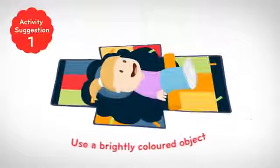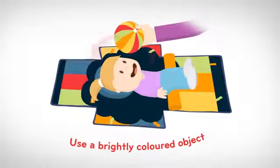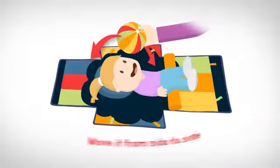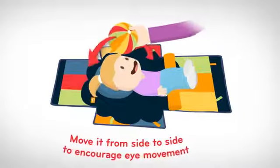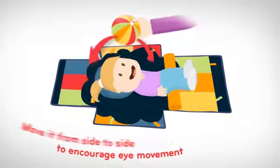Back laying. I use a brightly coloured object, usually one of Charlotte's favourite toys, and move it from side to side to encourage eye movement. I then move it slightly further away to encourage head movement.